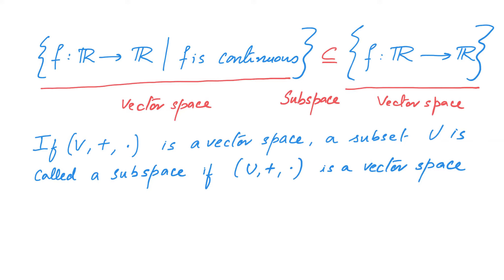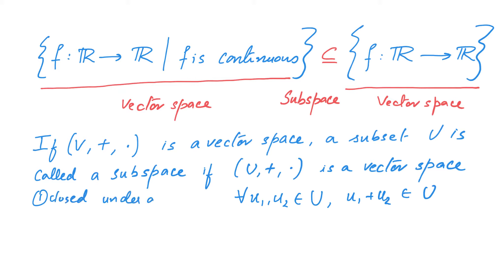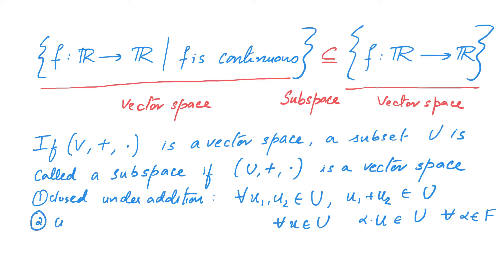Now notice that for the addition to make sense, we should have the property that for every two elements U1 and U2 in capital U, the sum U1 plus U2 should also belong to capital U. This property is called closed under addition. Similarly, for the scalar multiplication to make sense, we should have the property that for every element U in capital U, alpha times U should belong to capital U for all alpha in the field over which V is a vector space. And this property is called closed under scalar multiplication.